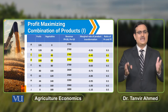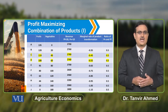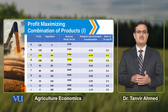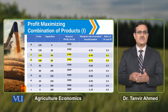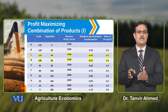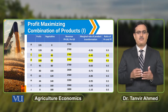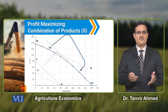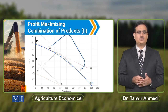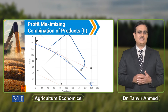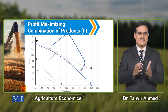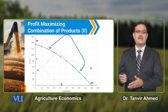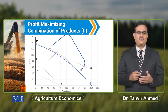He will produce less quantity of vegetables and more quantity of fruits. To collaborate this, you can see a hypothetical table showing the profit-maximizing combination of fruits and vegetables when the price of fruits is equal to 20 and the price of vegetables is equal to 10. We can see that the seed combination is where the farmer can maximize his profit.